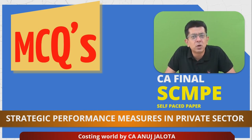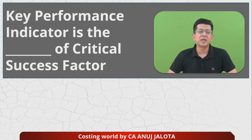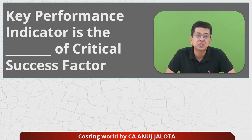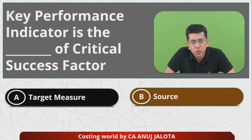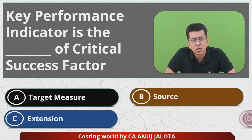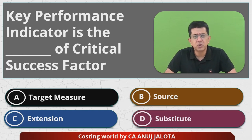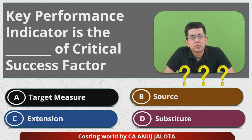Let's start with today's MCQ. Key Performance Indicator, popularly called as KPI, is the dash of Critical Success Factors. Four options: A) Target, B) Measure, C) Source, D) Extensions, or substitute. If you all know the answer, please comment below — pause the video, comment, and then continue.